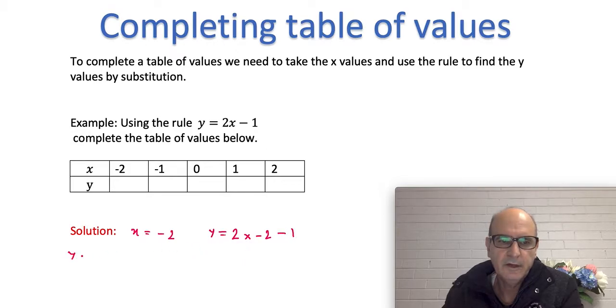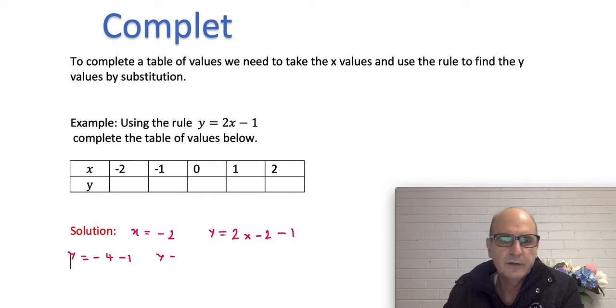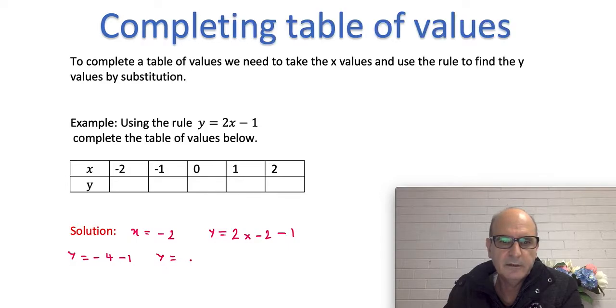Okay, now that becomes y equal to 2 times minus 2 is minus 4, and then minus 1. Minus 4 minus 1 is minus 5, so it gives us y equal to minus 5. So I write it here.